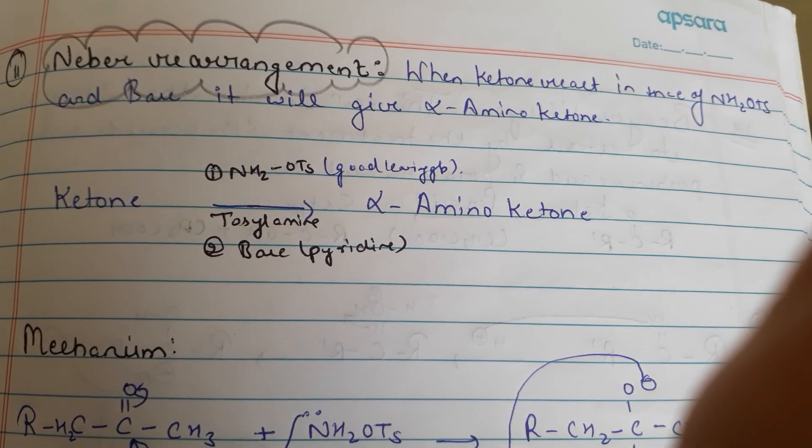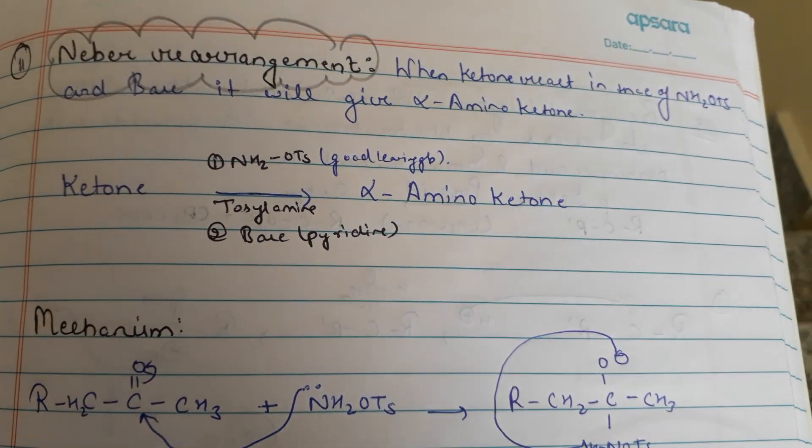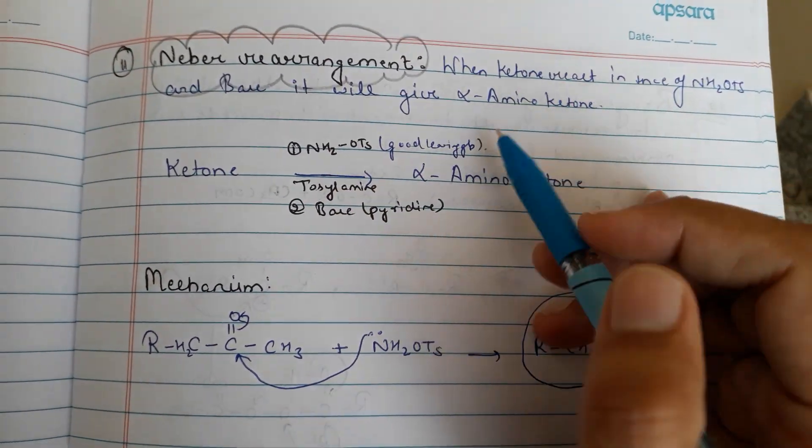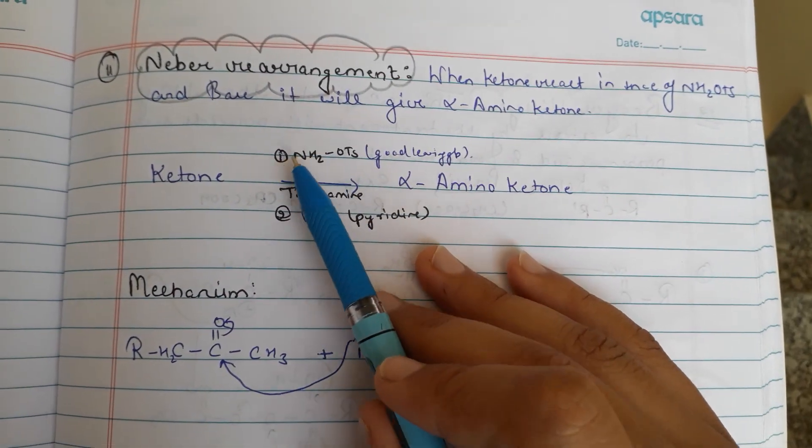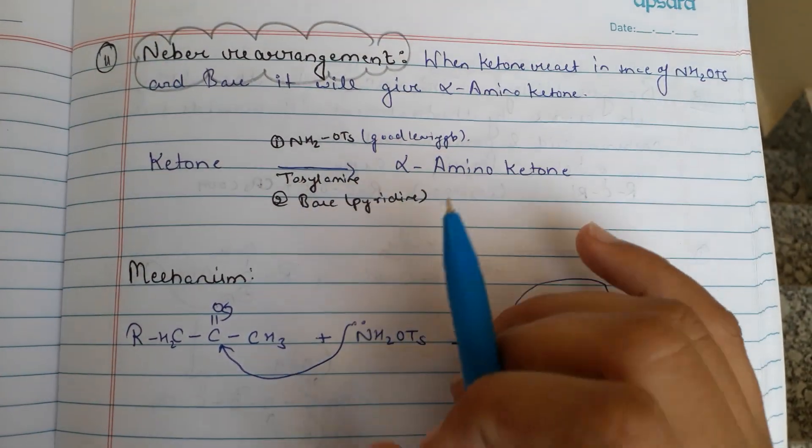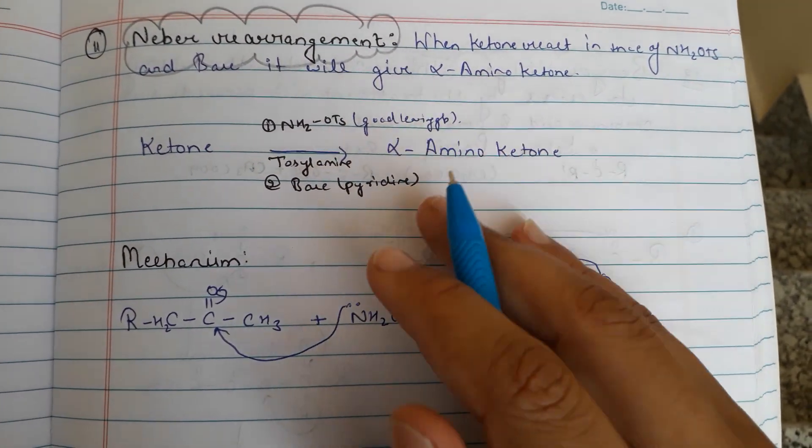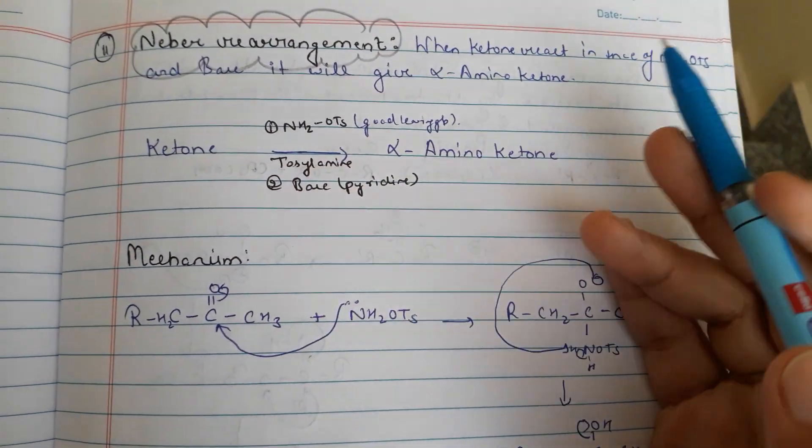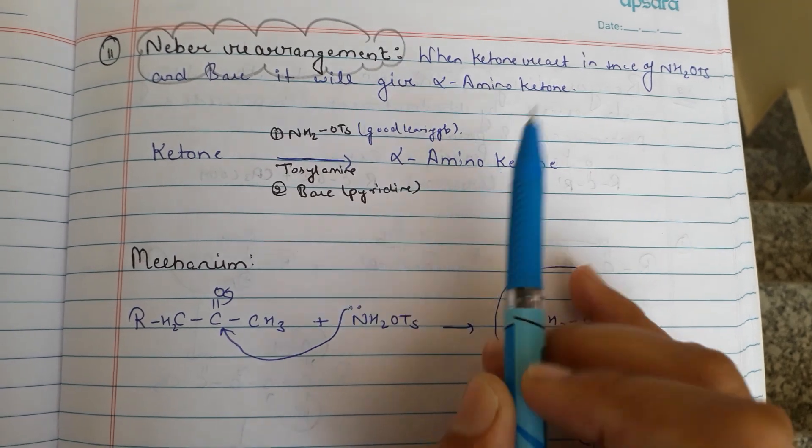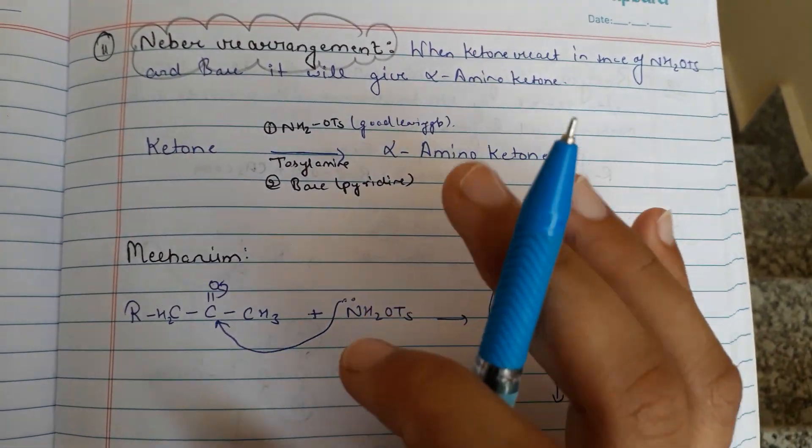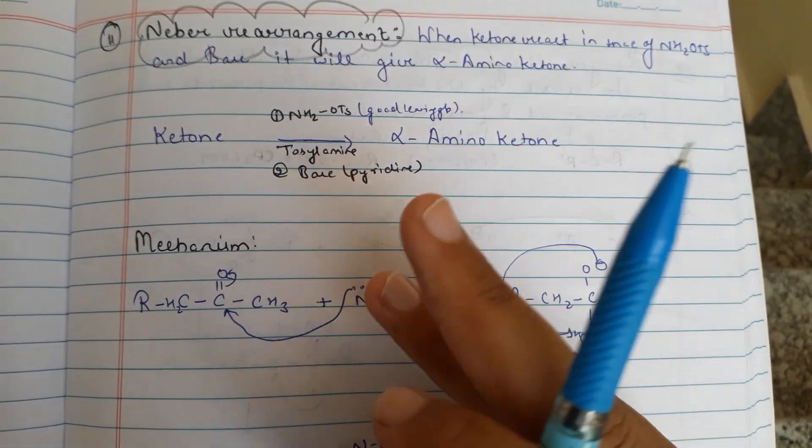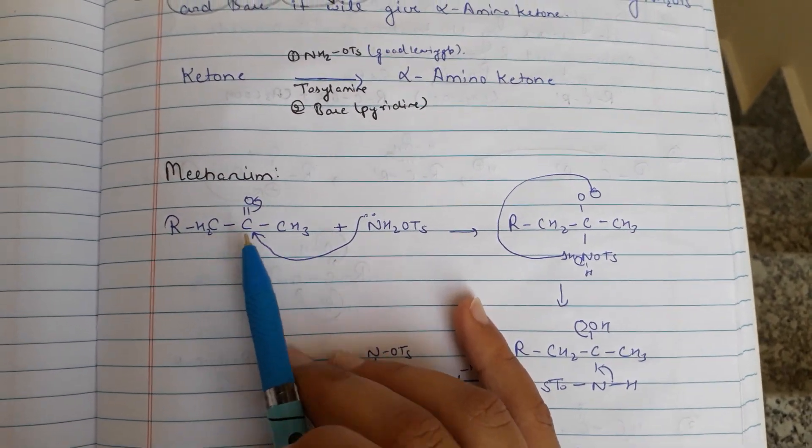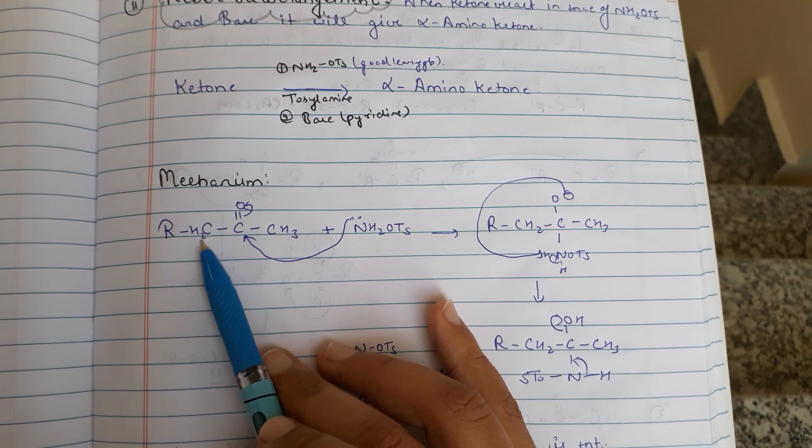Welcome to MSc Chemistry. Today's rearrangement is the Neber rearrangement. When a ketone reacts with NH2OTs in presence of a base like pyridine, and tosylamine as a good leaving group of NH2OTs, it will convert to alpha amino ketone. This is known as the Neber rearrangement: ketone to alpha amino ketone.